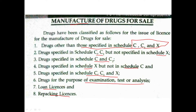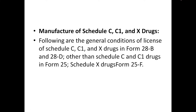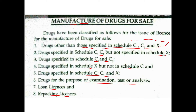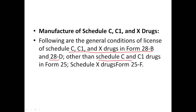The fifth category is C and C1. This category is for non-scheduled categories. For the first category, the license forms used are Form 28B and Form 28D — these two forms cover Schedule C, C1, and X. For drugs other than those specified in C, C1, and X, the form used is Form No. 25. For Schedule X, the form is Form No. 25F. We will use these form numbers.